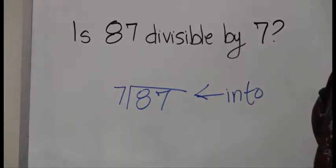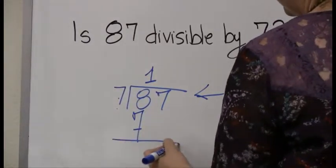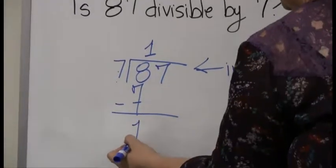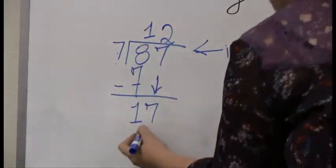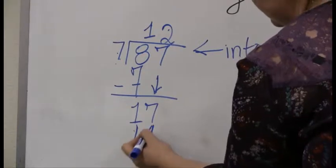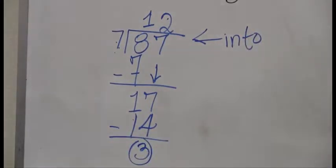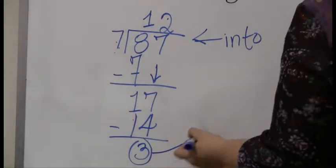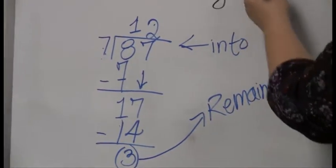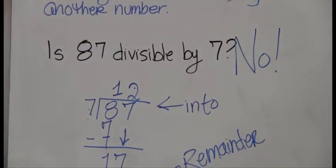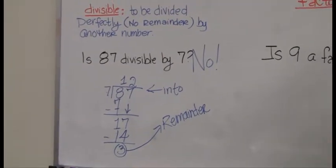Let me go ahead and do this math. 7 goes into 8 once, and 1 times 7 is just 7. Got to see what's left, so I'm going to go ahead and subtract. Got a 1 left. Drop the next digit, that's a 7. 7 goes into 17 twice, and 2 times 7 is of course 14. Got my remainder, my remainder is 3. See that remainder right there? Just its very presence tells me that the answer to this question is no. 87 is not divisible by 7. How dare you suggest it. So pretty simple concept. Divides perfectly, no remainder.